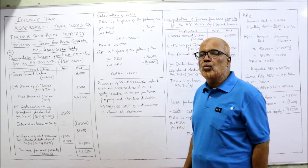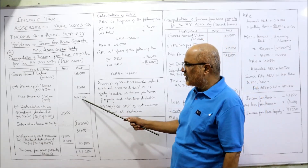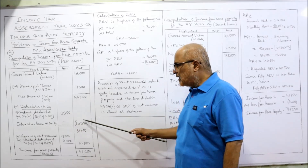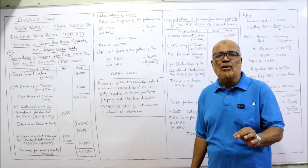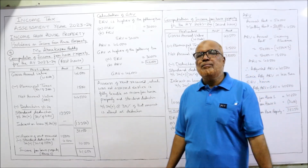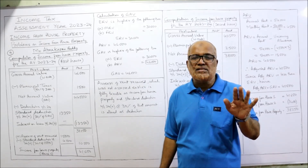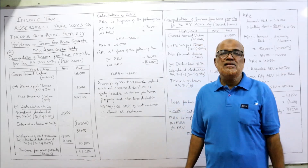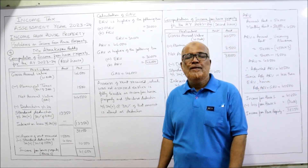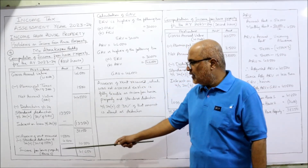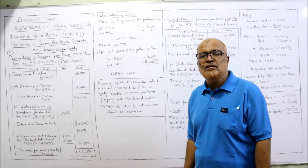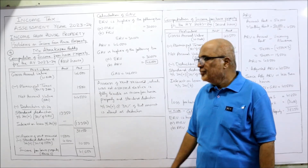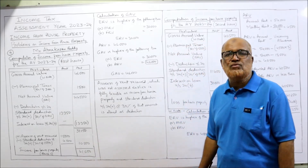The Net Annual Value (NAV) is 44,500. Standard deduction at 30% of NAV: 30% of 44,500 = 13,350. There is no interest on loan for the first house. Total deduction is 13,350, giving income from the first house of 31,150. Additionally, arrears of rent received of 15,000 (not assessed earlier) are taxable now. Standard deduction of 30% of 15,000 = 4,500 is allowed, so taxable arrears income is 10,500. Total income from the first house is 41,650.